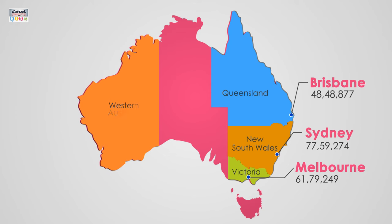Western Australia: the capital of Western Australia is Perth and it has the population of 2,558,951.